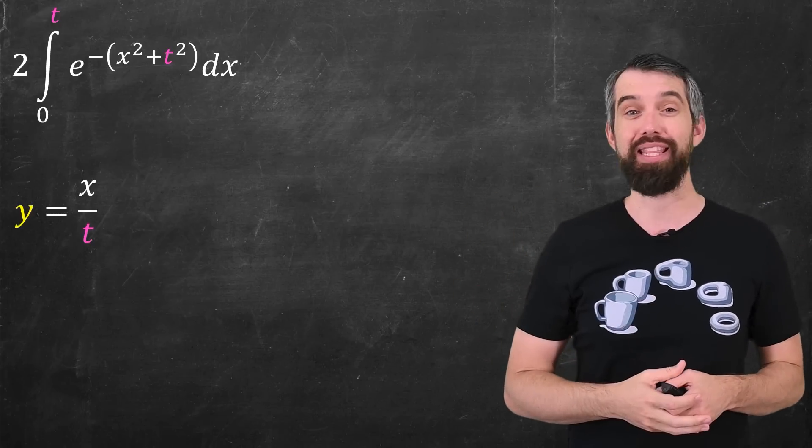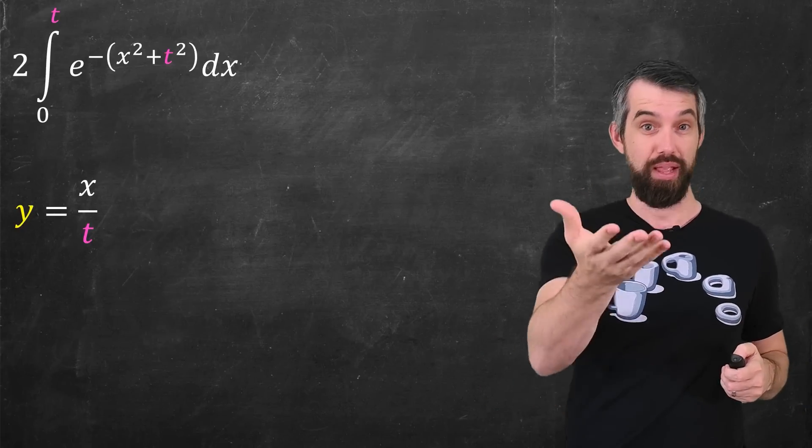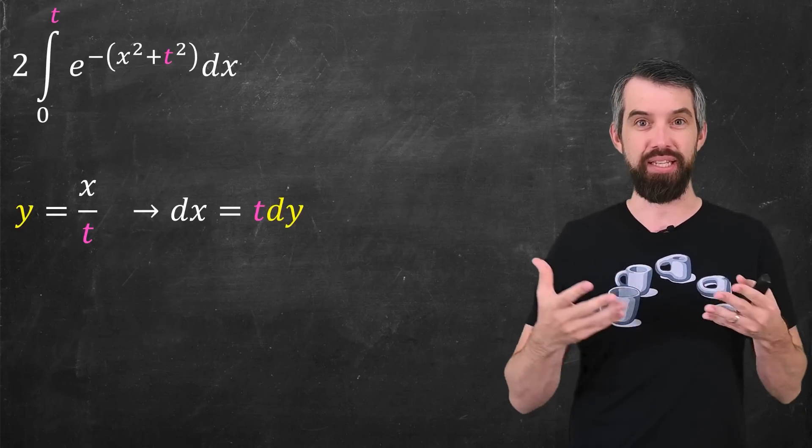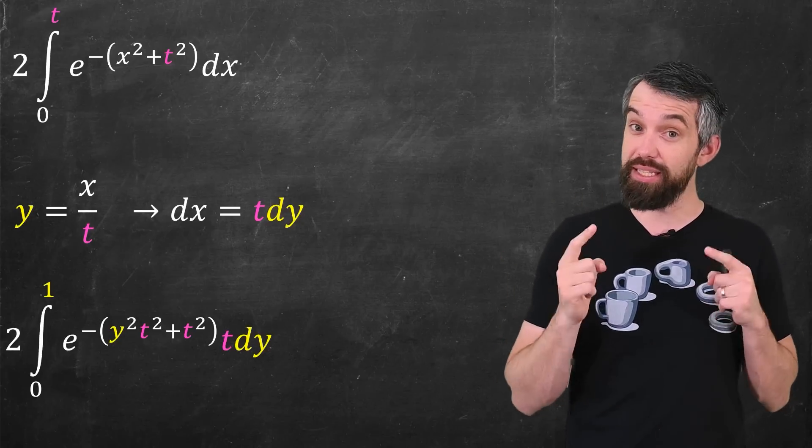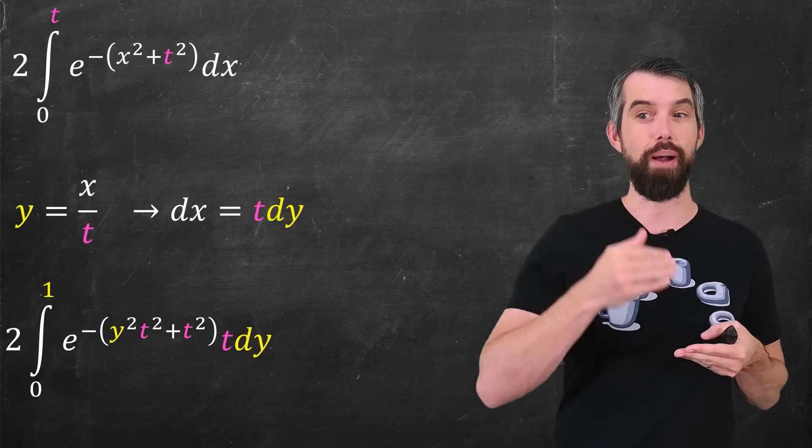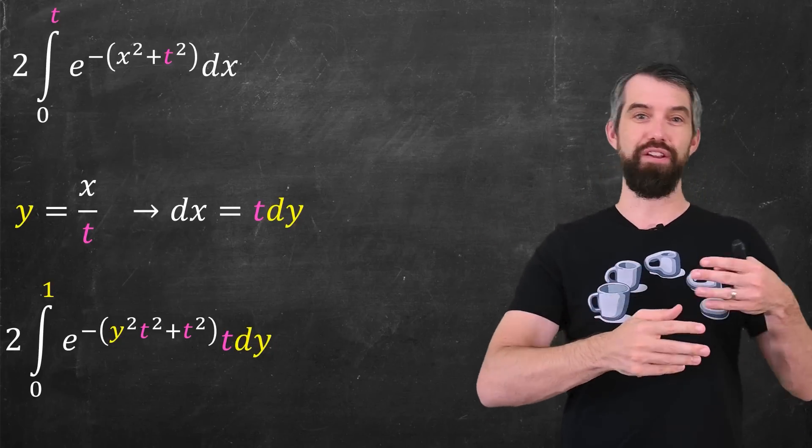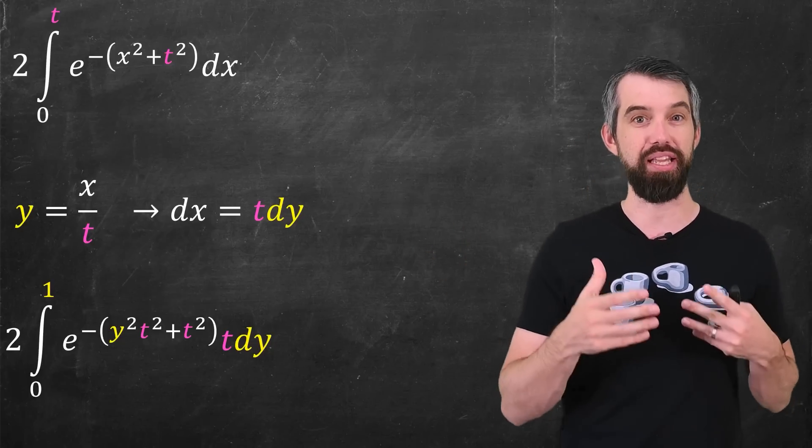For example, something like this. A new variable y is x divided by t. So if I then take dx, this is t dy. And this was useful because when I plug in that change of variables, instead of an integral from 0 to t, I get this integral from 0 up to 1. And sort of the effect of that is now my integrand has this multiplication by t as well.